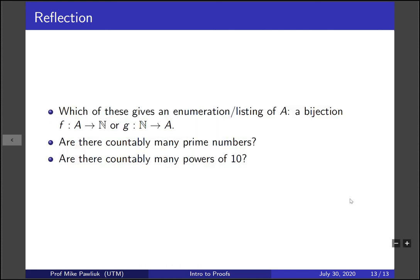Okay, let's take some time to reflect. Which of these two situations gives an enumeration or a listing of A? A bijection from A to N or a bijection from N to A? Are there countably many prime numbers? Are there countably many powers of 10?